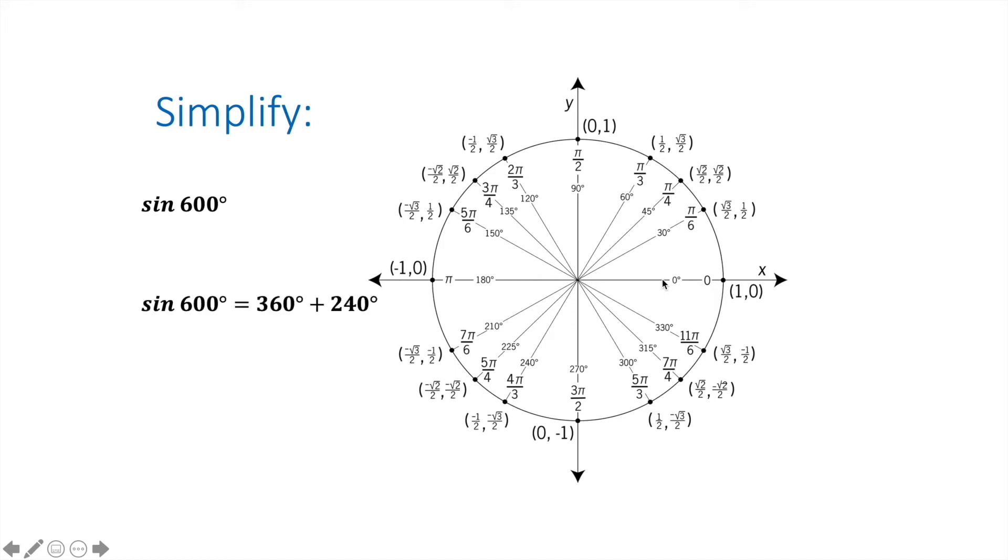So what this basically means is we're going to take our 360 degrees, and then we're going to add 240 degrees on top of that. So we're going to go all the way around once, then we're going to go around an additional 240 degrees.